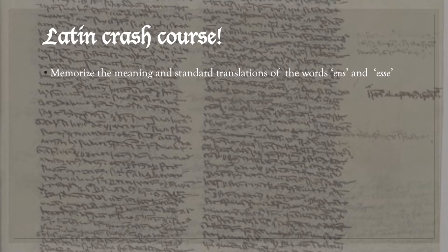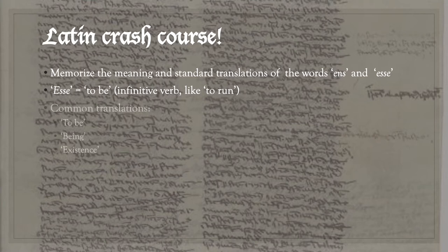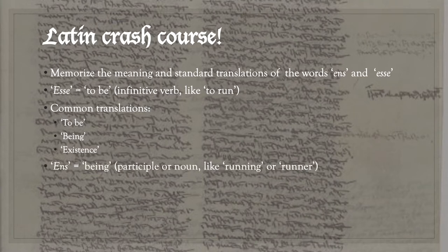Memorize the meaning and standard translations of the words 'ens' and 'esse'. 'Esse' is the Latin infinitive, which can be literally translated into English as 'to be'. Infinitive verbs are verbs like 'to run' or 'to dehydrate'. Common translations of St. Thomas' word 'esse' are 'to be', 'being', or even 'existence'. The Latin word 'ens' is literally translated as 'being'. 'Ens' is a participle or noun like 'running' or 'runner'. Common translations of 'ens' are either 'a being' or just 'being'.